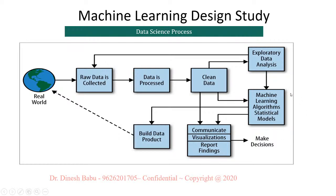Machine learning is a part of data science. Data science is a process where we convert raw data into meaningful information for making better decisions in competitive business. First we get the raw data, then we process it, clean it, and go for EDA — exploratory data analysis. Based on that we apply machine learning, visualize the results, and finally make decisions. Machine learning is one module within the data science process.